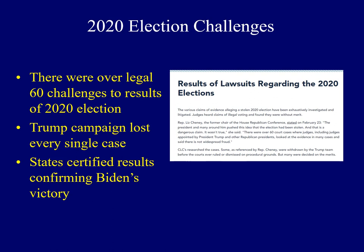If a candidate has a problem with the results in a particular state or in an election, they file a lawsuit and go through the judicial system. That's what candidate Trump did in many cases. In 2020, there were over 60 court cases undertaken by President Trump's campaign in several states where they challenged the results of those elections. In every single case, President Trump lost — in fact, many of those cases were heard by judges appointed by President Trump himself. Eventually, every state certified its election results, confirming that Joe Biden won the election in 2020.